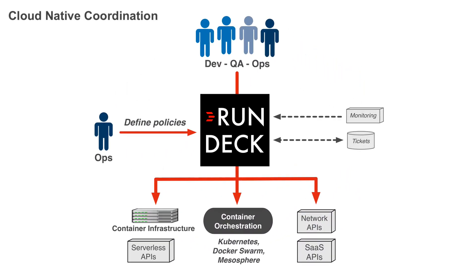Cloud-native coordination is a new use case growing in popularity. Containers and serverless architectures are major shifts that we see emerging across our user community. With Rundeck, you can define procedures that call the various APIs of your container orchestration tools to launch services or to troubleshoot when things go wrong. Rundeck allows you to set up a more friendly and secure interface so you aren't exposing your users directly to low-level APIs or service-specific user interfaces. Rundeck is also great for orchestrating procedures that span your new container or serverless infrastructure APIs plus legacy systems, databases, and network gear.